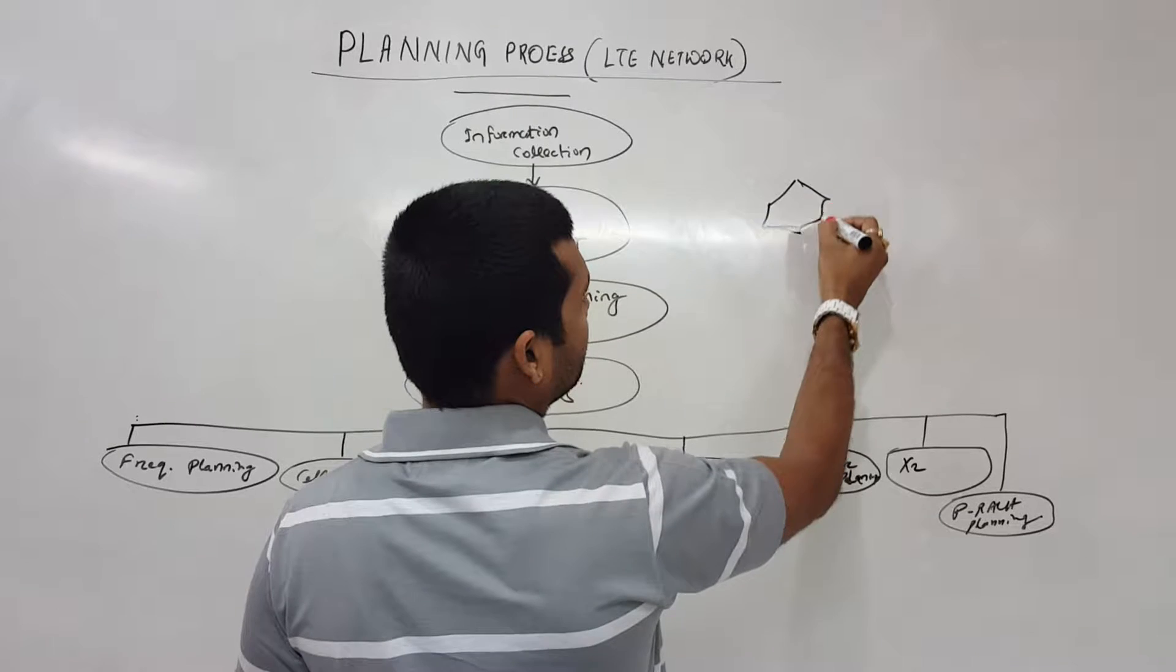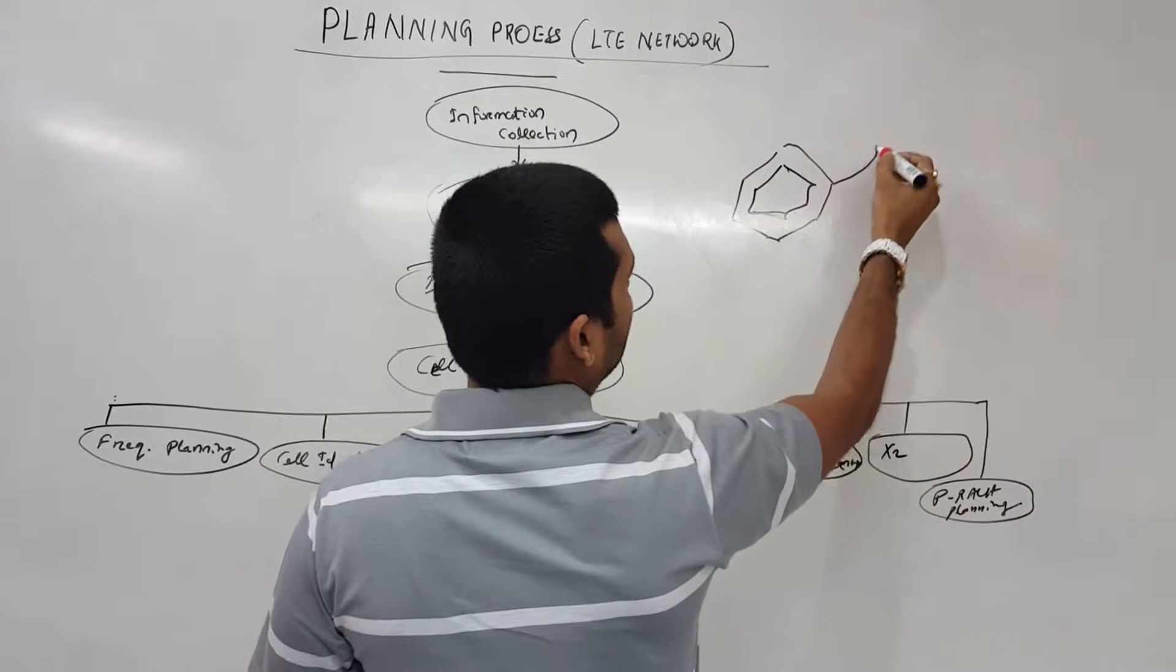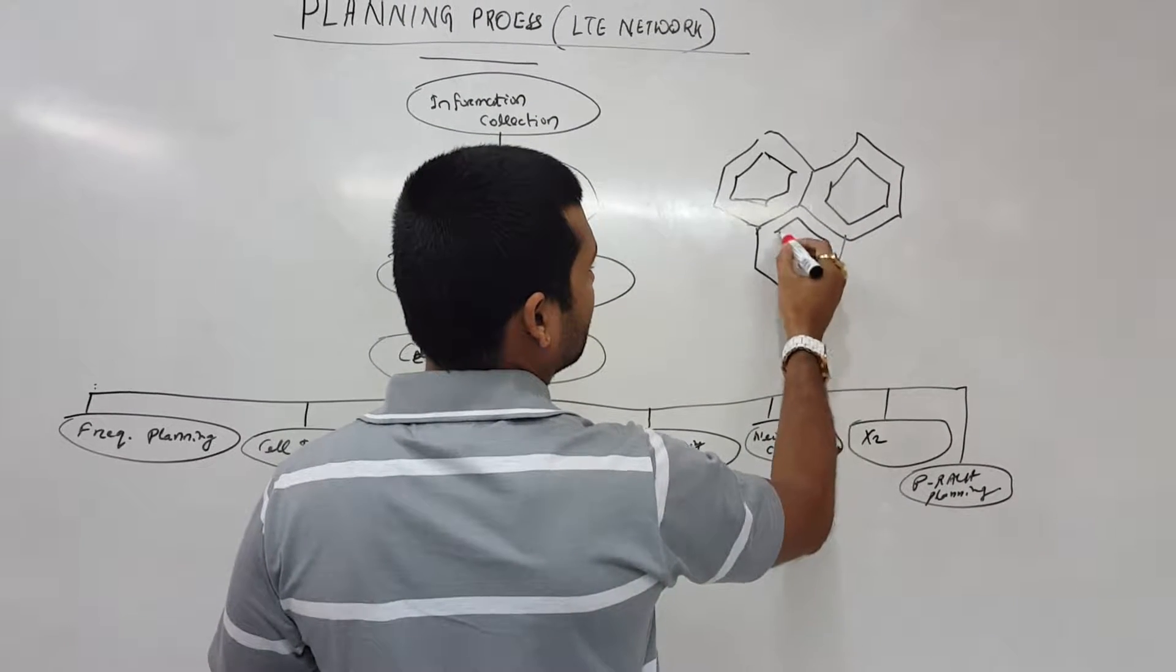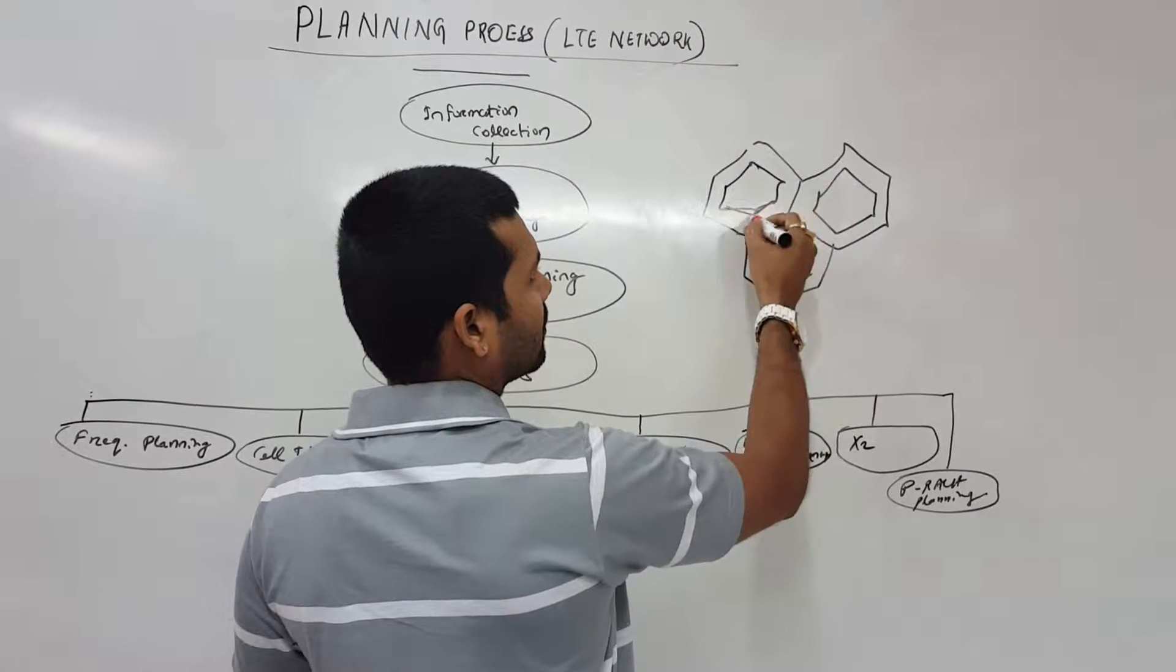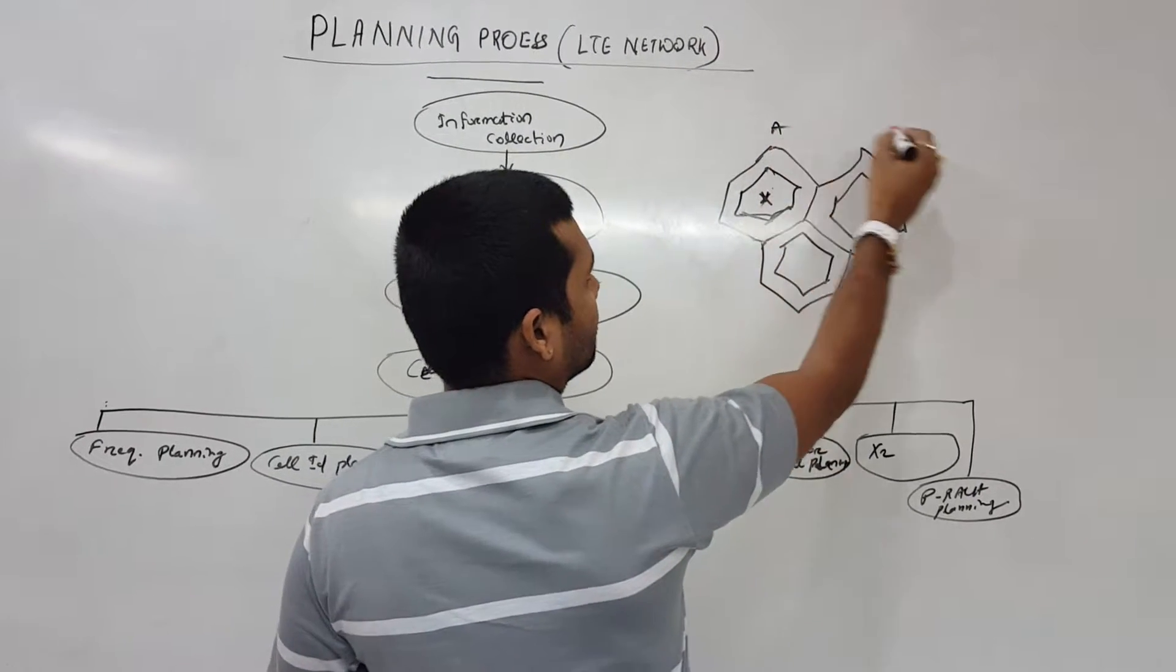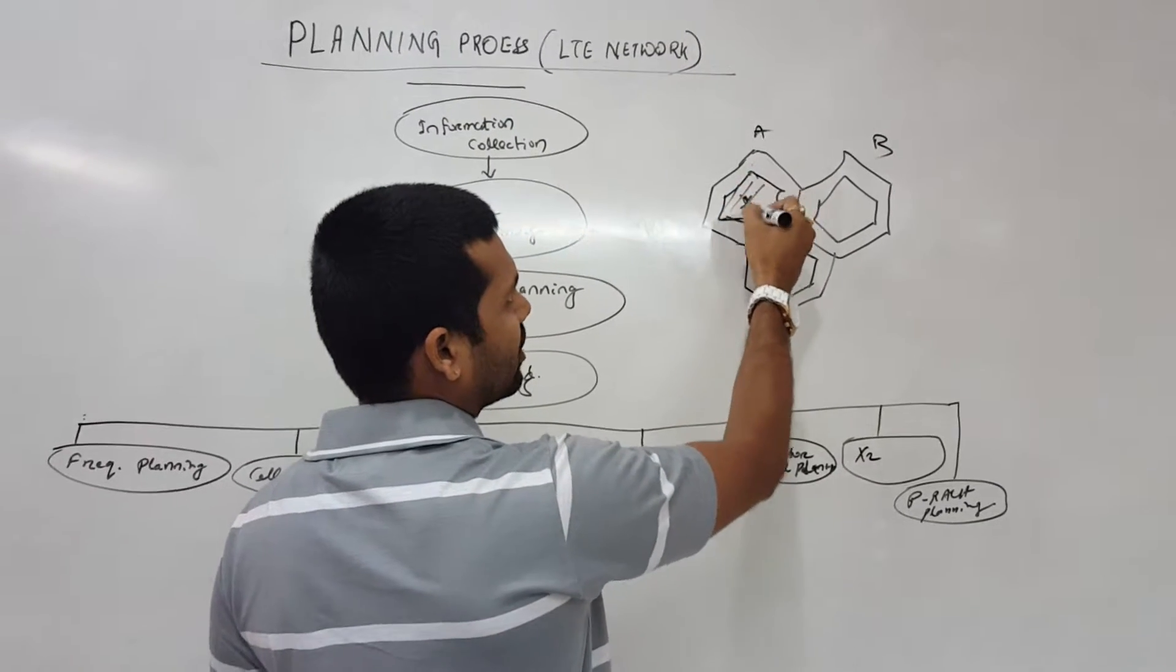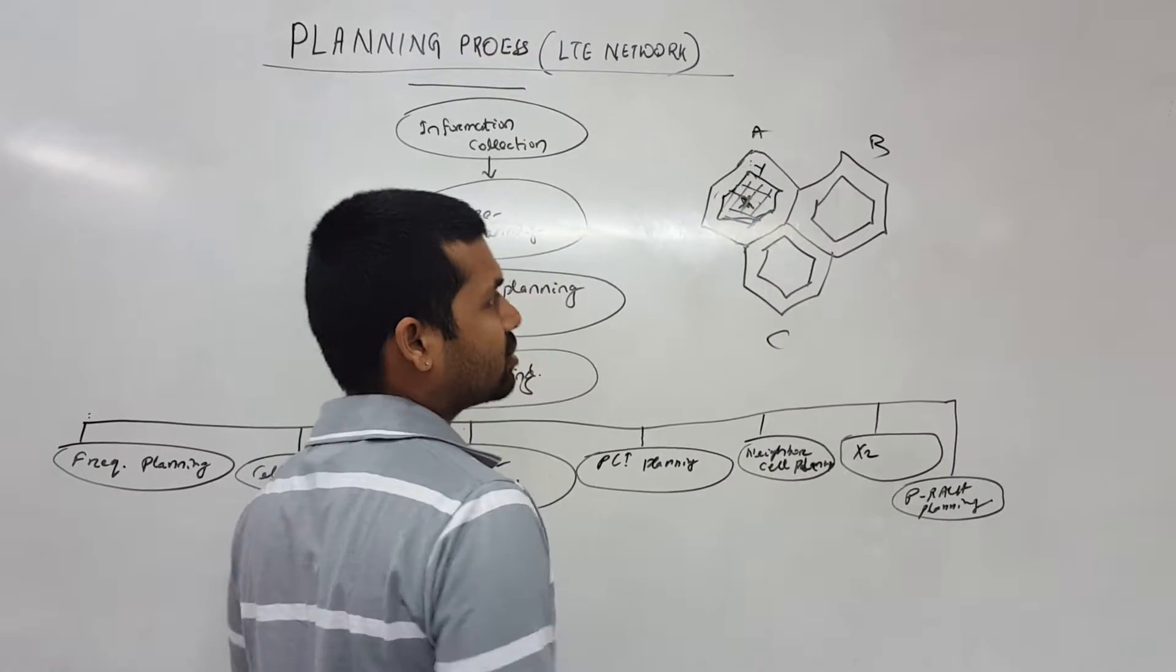So let's say this is the cell and this is the border cell. So how ICIC works: I'm having, let's say, X frequency for this area of the cell. These are cells A, B, C. For this side, for the central area, I am putting frequency X and for this outer area I am putting Y.